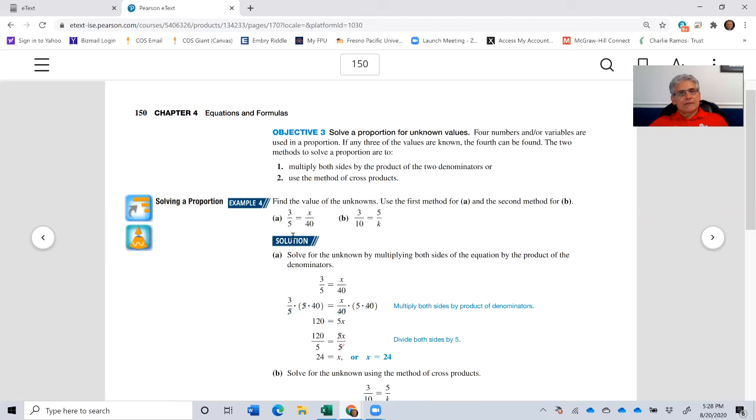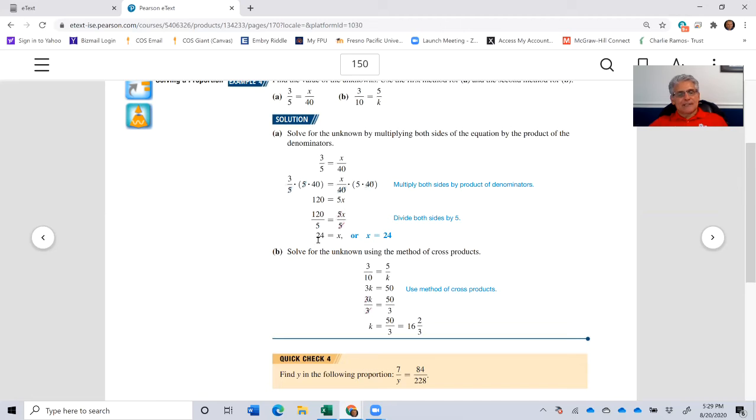If you have 3 to 5 equals x to 40, we don't know what x is. We can use cross multiplication to make it easier to solve for x. 3 times 40 is going to give us 120. 5 times x gives us 5x. So 120 equals 5x. Now we'll divide both sides by 5 and 120 divided by 5 equals 24. Therefore, x is equal to 24.